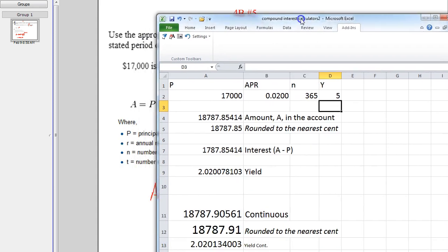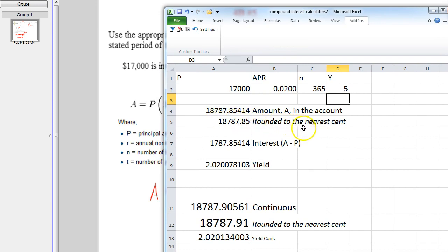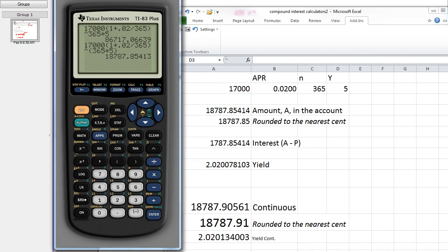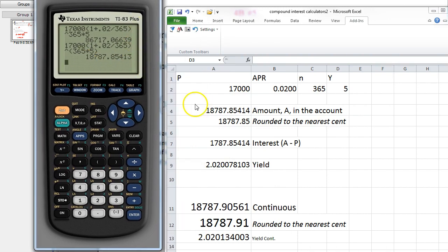And then there's the answer that we want, rounded to the nearest cent. So you see here, it ends up being the same thing I got.